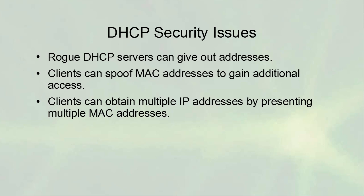Clients can spoof MAC addresses to gain additional access. If you know a specific MAC address gets through the firewall, you can spoof it — though this is more of a MAC address security issue than a DHCP problem. Clients can also obtain multiple IP addresses by presenting multiple MAC addresses. If a client wants to create a denial-of-service situation, they could present many different MAC addresses, obtain many IP addresses, and lock them all up so they're unavailable to anyone else.